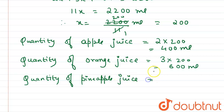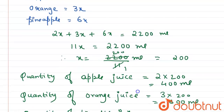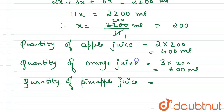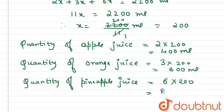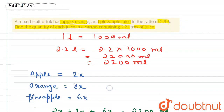Similarly, the quantity of pineapple juice equals 6x, that is 6 into 200, which gives 1200 mL.